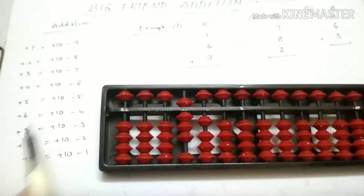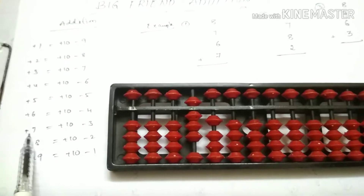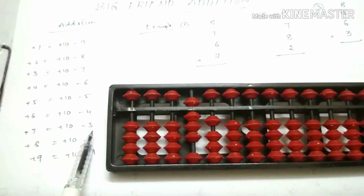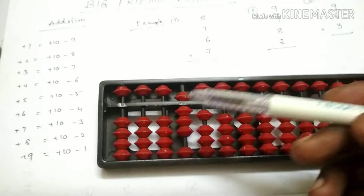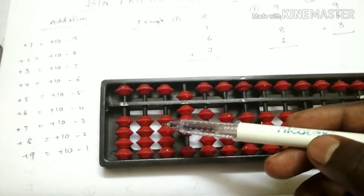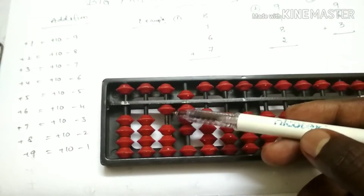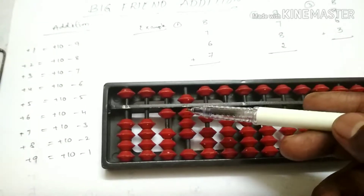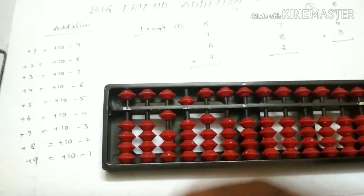I will add the formula. Plus 7 is equal to 10 minus 3. So take 10 to the digit, then do minus 3. Minus 3 means we subtract minus 3.